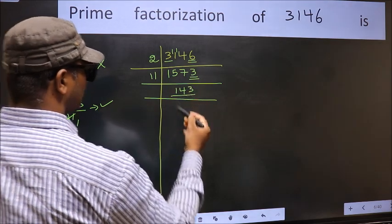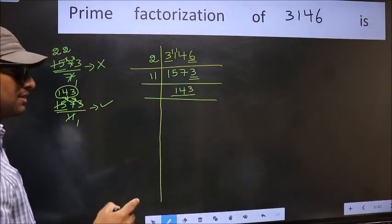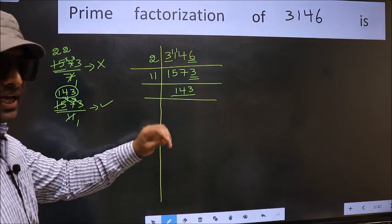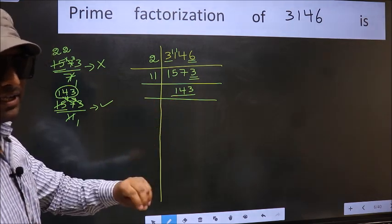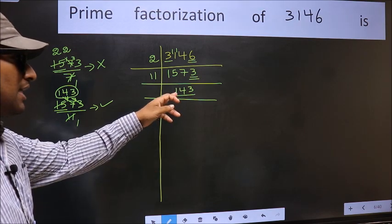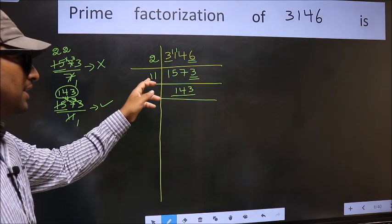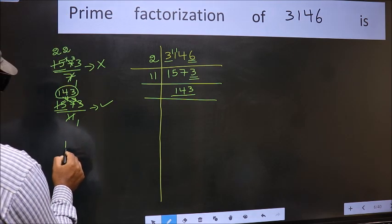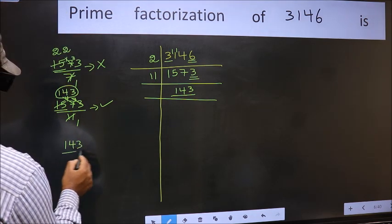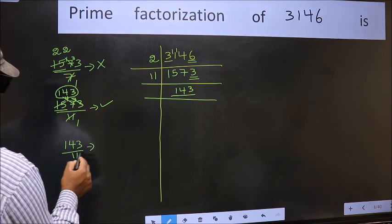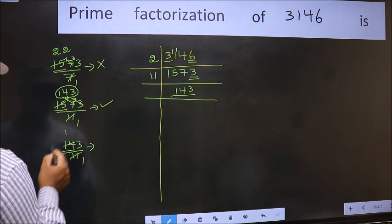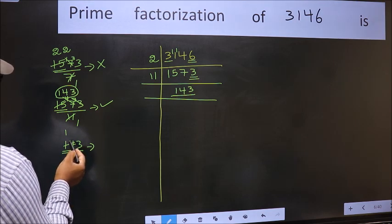Now for this number, we don't need to check whether it is divisible by 2, 3, 5 or 7. As we had already checked earlier, we should start checking its divisibility from 11 onwards. So let us check 143 by 11. Our number close to 14 in 11 table is 11, 1's 11. 14-11, 3.